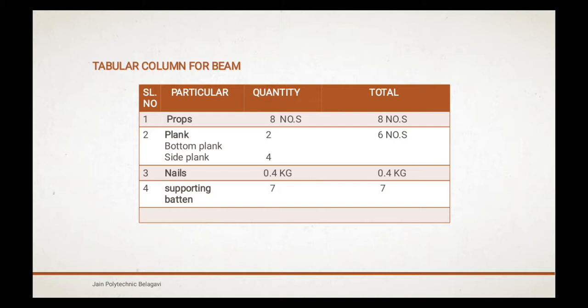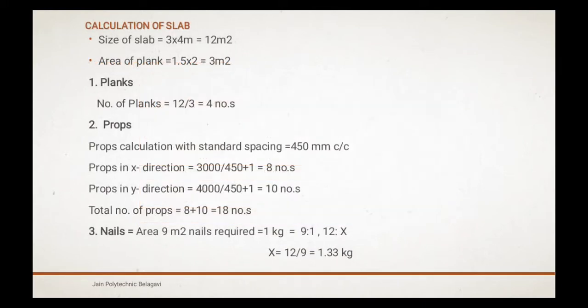Calculation of slab: size of slab is 3 by 4 meters, so 12 m². Area of plank is 1.5 by 2, so 3 m² is our area of plank. Number of planks: 12/3 = 4 numbers.